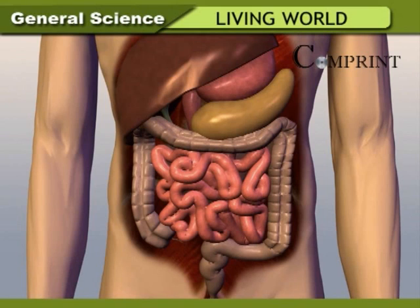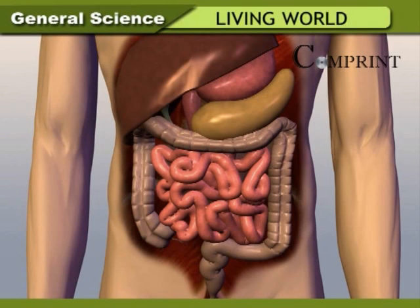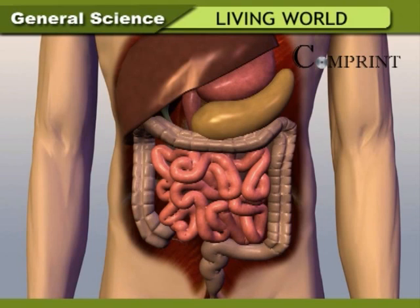The digestive system consists of a pipe-like alimentary canal and digestive glands. The alimentary canal takes different shapes in the form of different organs. The important parts of the alimentary canal are given below.